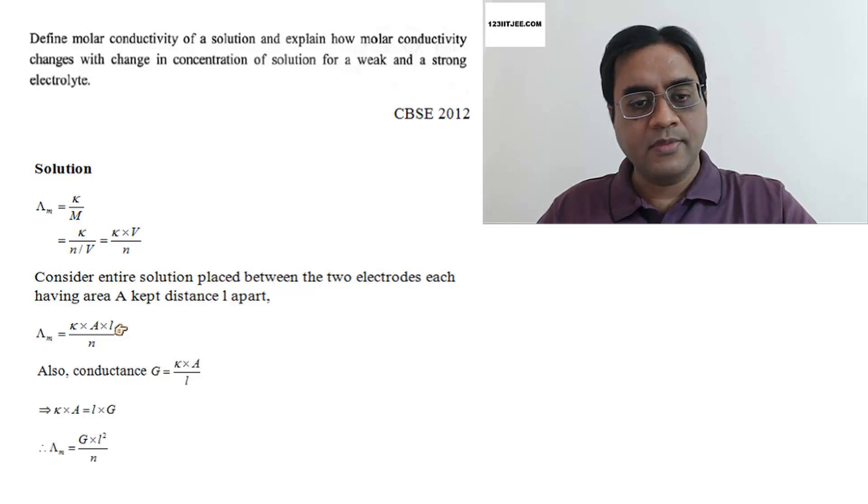Now, conductance is this. From this, we can find this product and put it here. So we have LG into L, L square G.